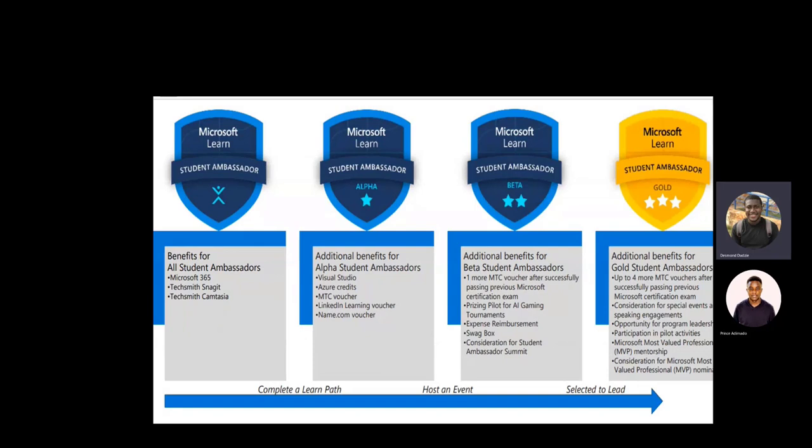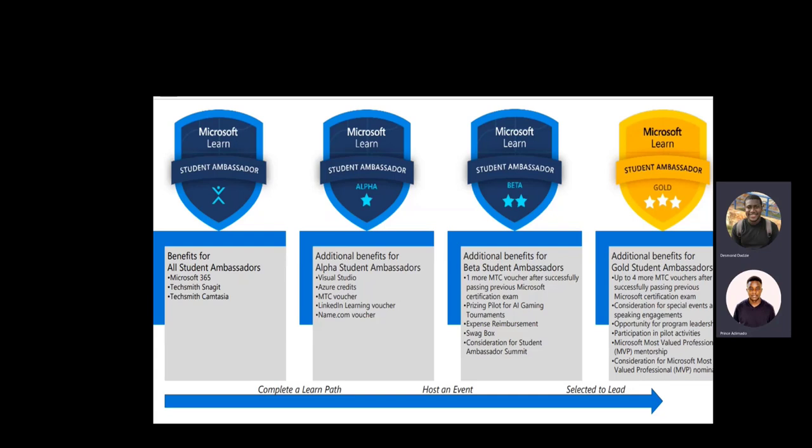Let's look at the milestones an individual goes through to become a Microsoft Learn Student Ambassador. First, you go through the application process, and if accepted, you officially become a Microsoft Learn Student Ambassador. Benefits at this stage include Microsoft 365, TextNet, and Snuggets, and access to community records.